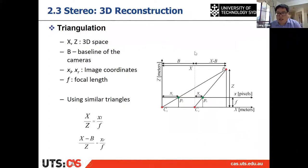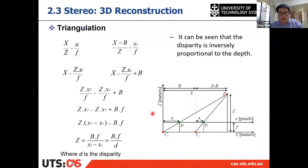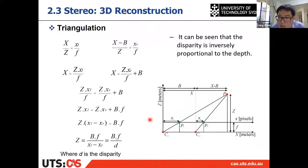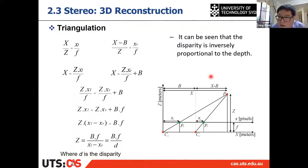Something important to mention: XL and XR are not the UV values of the image. The Z-axis is the camera axis, and this point is the principal point — not the origin of the image. The origin of the image is on one side, so the principal point is where the camera axis intersects the image plane.